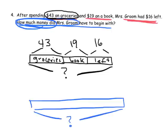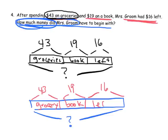And then, it says, she spent $43 on groceries. 19 on a book. And, she had $16 left over. So, that's another way. Same identical result. The model looks the same. But, how I got there is different.